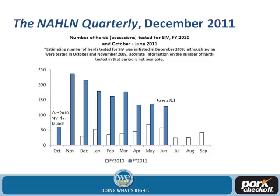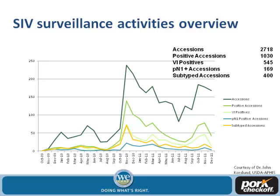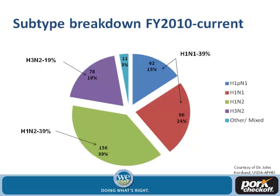The blue is 2011 and the white is 2010, showing the increase following the launch of the plan in October 2010, with a sharp increase in submissions in November 2010. This graph shows the accessions, the ones that were positive, the virus isolations that were positive, and the ones that have been subtyped — a breakdown of the different subtypes circulating in swine herds, as well as some H1N1 pandemic, with some mixed ones comprising a small part.